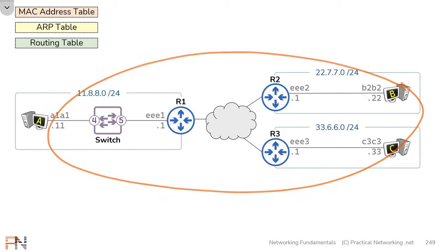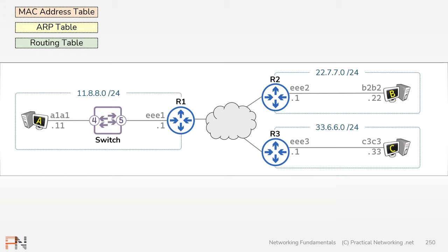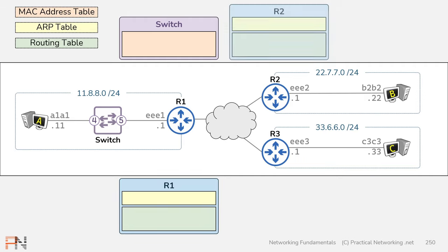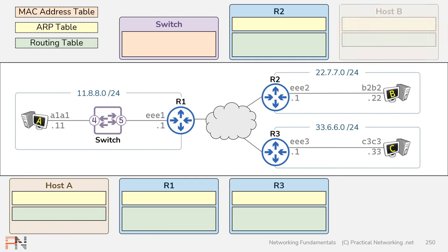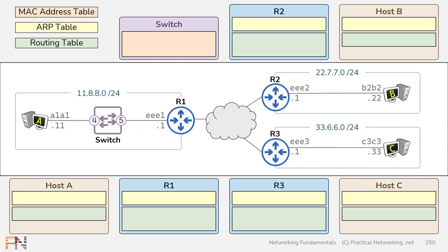Each of the devices in this topology are going to use one or more of these tables to process data, shown in the gray boxes. Our switch is only going to have a MAC address table. Our routers have both an ARP table and a routing table. And our hosts, being very similar to routers as discussed back in lesson five, also have both an ARP table and a routing table. Both the MAC address table and ARP tables are going to be populated dynamically as traffic flows through the network. The routing table, however, must be populated ahead of time.